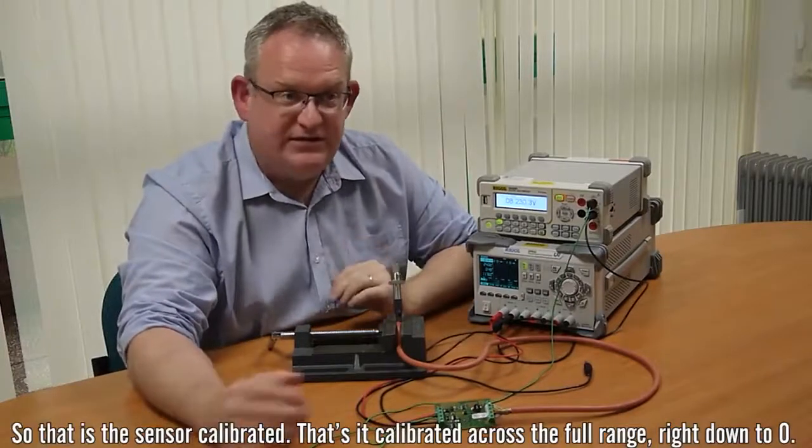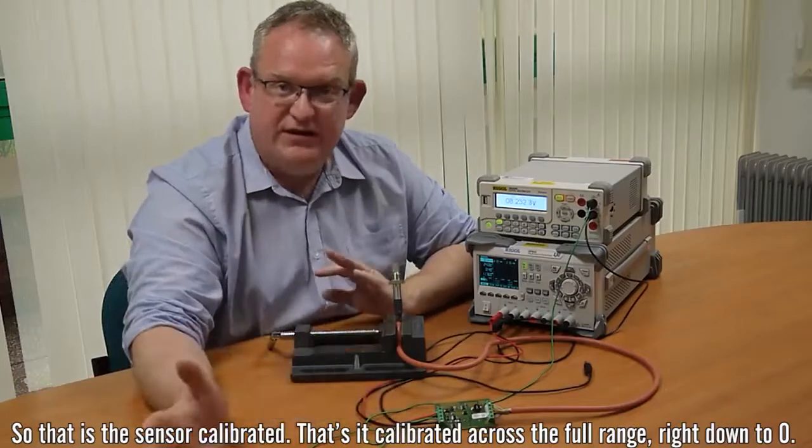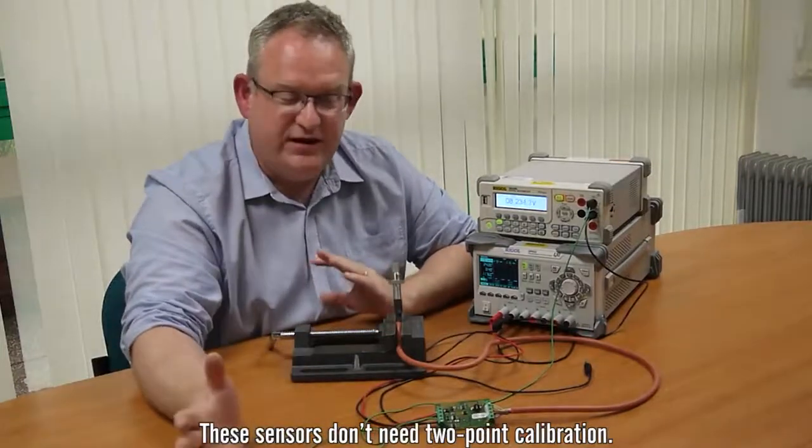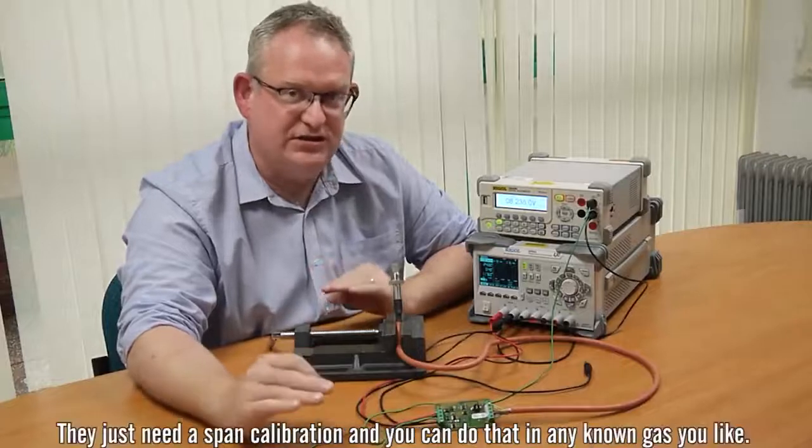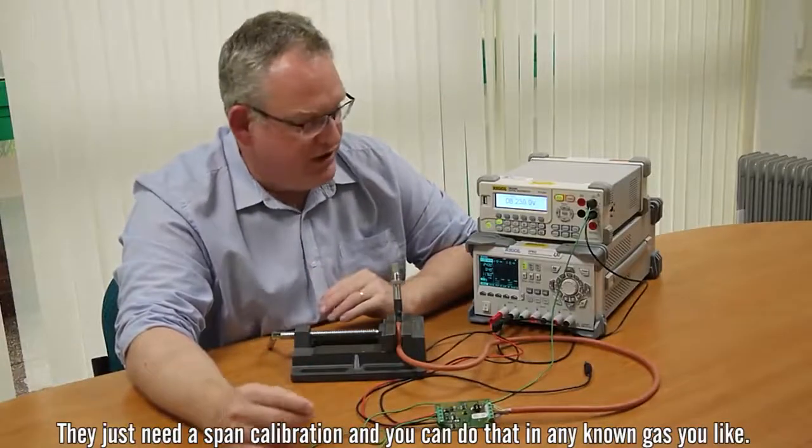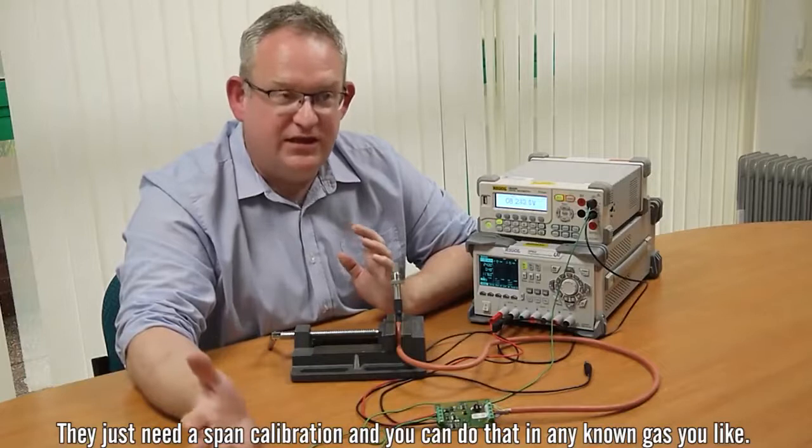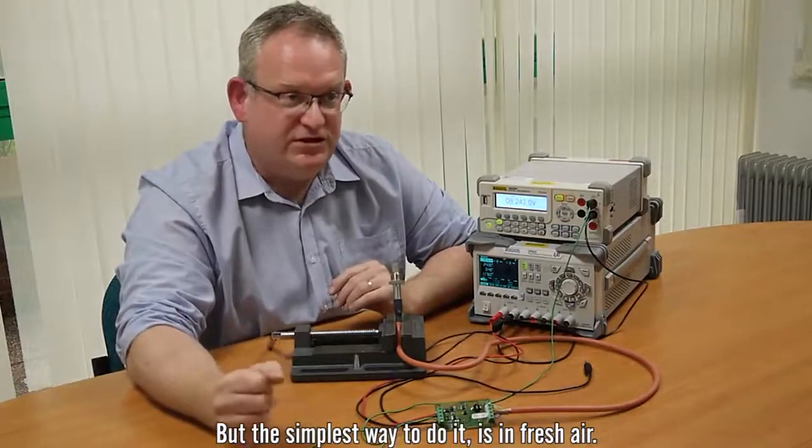So that's the sensor calibrated. That's it calibrated across the full range right down to zero. These sensors don't need two point calibration. They don't need the zero or an offset calibration. They just need a span calibration and you can do that in any known gas you like but the simplest way to do it is in fresh air.